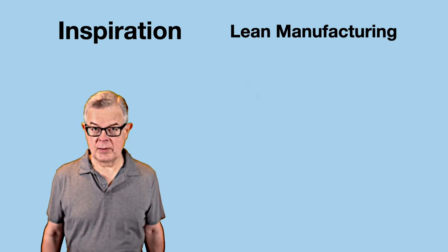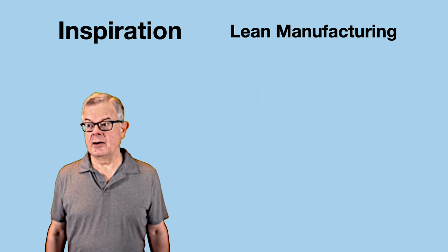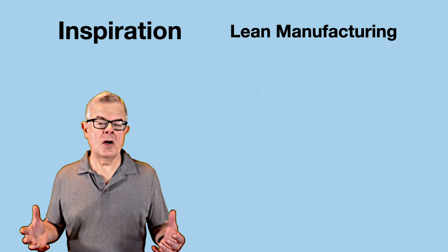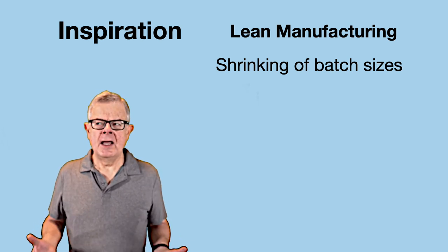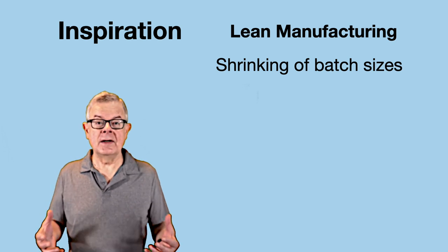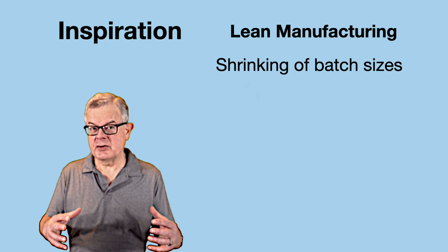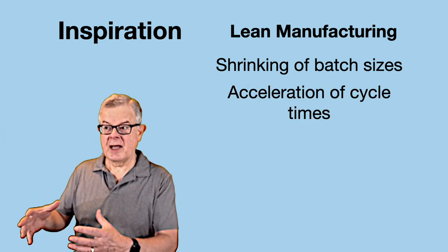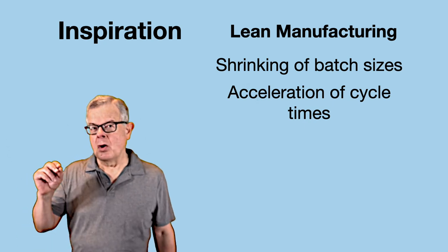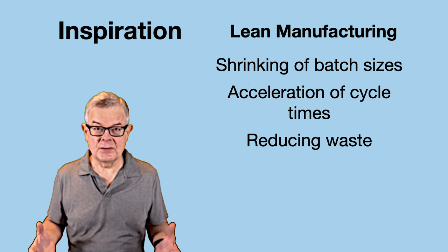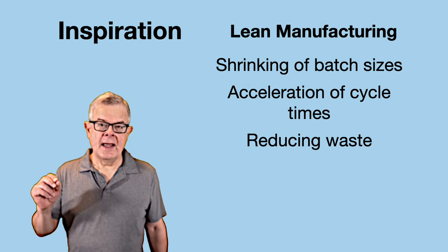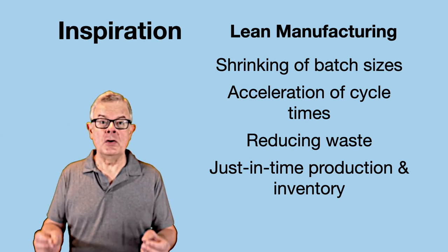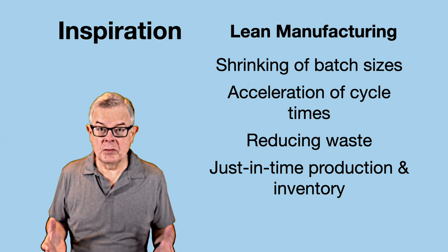Eric took inspiration from Lean Manufacturing, which was developed originally in Japan and goes back to Toyota's efforts right after World War II. The Lean Manufacturing process focused on things like shrinking batch sizes. Toyota had to do that after the war because they had limited access to resources, so they learned to build smaller batches with less raw material. That also required accelerating cycle time and reducing waste. This led to just-in-time production, which reduces the amount of inventory you have to have on hand.